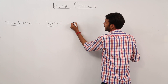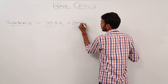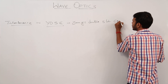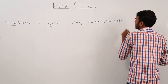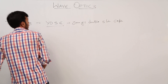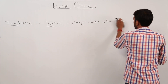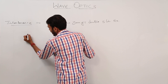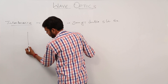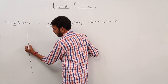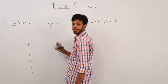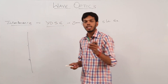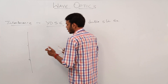What is YDSE? This is Young's Double Slit Experiment. In this setup, we have a source where two different sources of light are placed. I am representing crests with a green pen and troughs with a red pen.